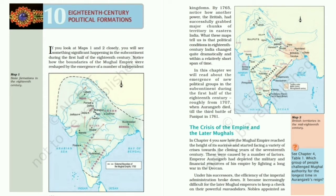In this chapter we will read about the emergence of new political groups in the subcontinent during the first half of the 18th century, roughly from 1707 when Aurangzeb died, till the third battle of Panipat in 1761. It was around this time that the Syed brothers, Abdullah Khan and Hussein Ali Khan, emerged as powerful figures in the Mughal court. They could place whoever they wanted on the throne and were often referred to as the king makers. Thus, the Mughal emperor was no longer the supreme authority.